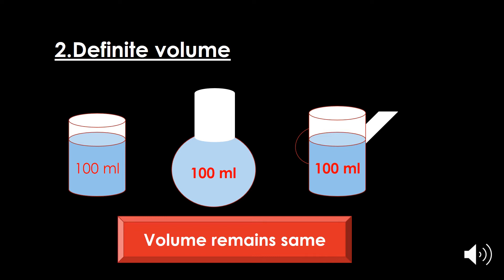The second property of the liquid is that liquids have a definite volume. Take some water in a beaker and mark the level — here the water is 100 milliliters. Pour this water into a round bottom flask: the water takes the new shape but the volume remains 100 milliliters. Transfer it again into a jug — it takes the shape of the jug with the same volume of 100 milliliters. There is no change in the volume, so liquids have a definite volume.